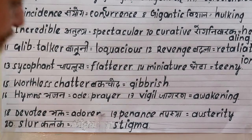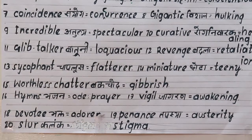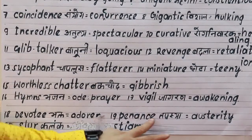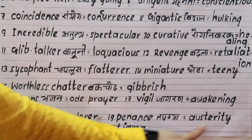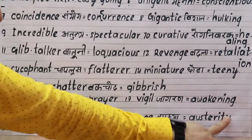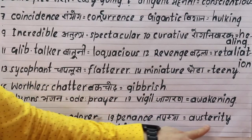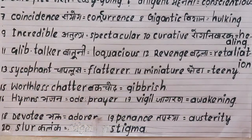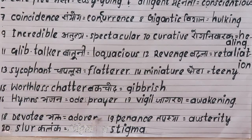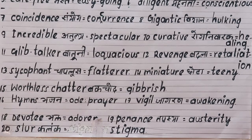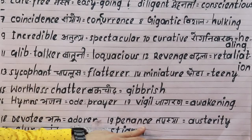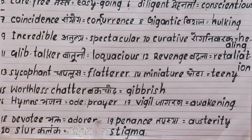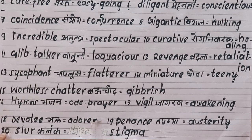Eighteenth is 'penance', meaning tapasya or austerity — performing spiritual discipline. The synonym is 'austerity'. For example: Lord Rama did penance for 14 years during his exile.